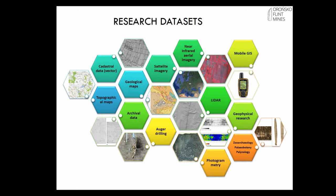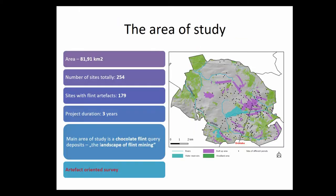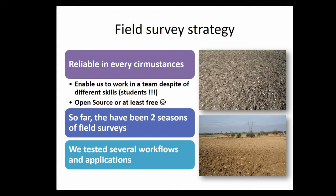We also had cadastral data in vector formats, near-infrared aerial imagery, and some other things. The area is not very big — just 80 square kilometers — but as I mentioned, it's packed with sites, most of them dated to periods related to the flints. Since the project was only three years long, we were not able to map all the sites; the major concern was to study the extent of the sites and their chronology. Katarzyna had the idea not to concentrate on the sites themselves but on the distribution of artifacts, so this was more of an off-site, artifact-oriented survey.